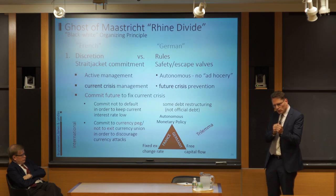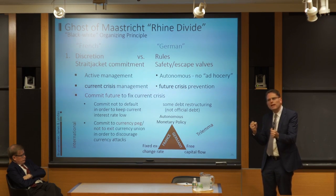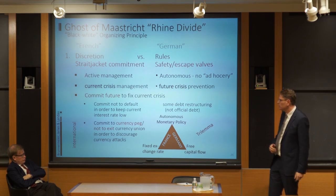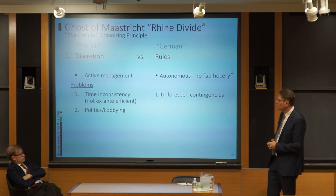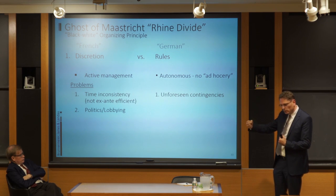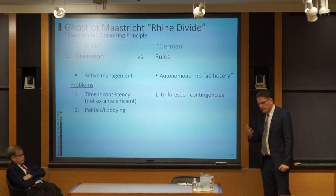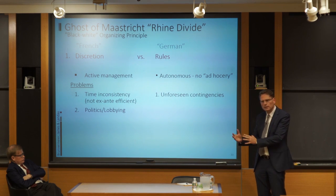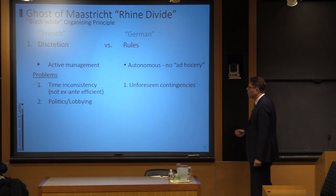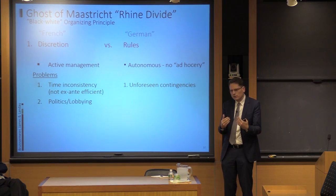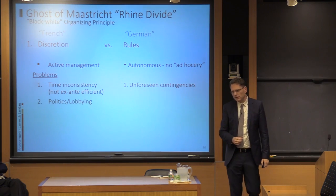On one hand, you commit very strongly to something — this gives you an advantage but forces you to actively manage in other dimensions. From a German perspective, you want everything more flexible so it doesn't require government intervention later. Of course, with the discretion approach you have the time inconsistency problem: what you'd like to commit to ex ante is not optimal ex post. Equally emphasized by Germans: you're always subject to political pressures and political economy problems. On the other hand, a rule system often encounters unforeseen contingencies that rules cannot accommodate because you don't know what will happen.